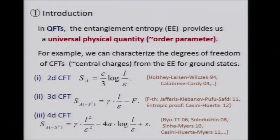In 3D conformal field theory, there is also a logarithmic term — if we get rid of the area divergence, the coefficient of that logarithmic term is directly the central charge called A. And even in odd-dimensional conformal field theory, where there is no central charge, we can pick up a finite quantity just by removing the area divergence, and this precisely agrees with what people call F.